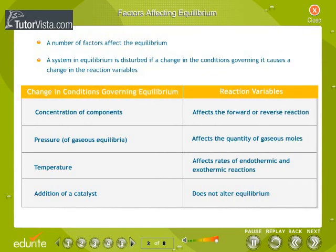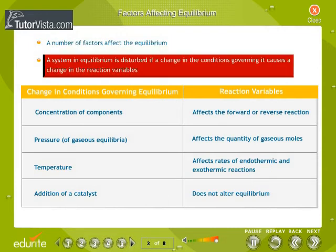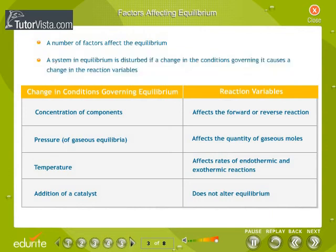Factors affecting equilibrium. A number of factors affect the equilibrium. A system in equilibrium is disturbed if a change in the conditions governing it causes a change in the reaction variables. Read through the table shown here.